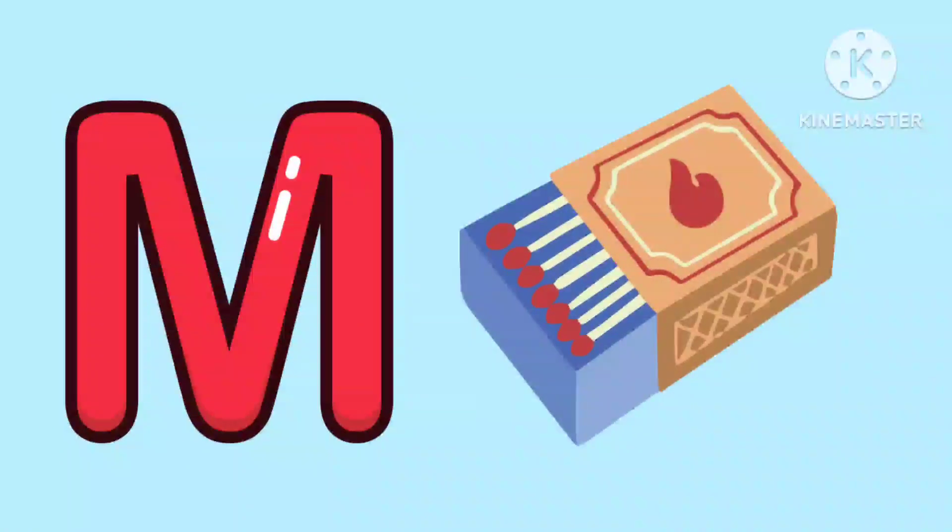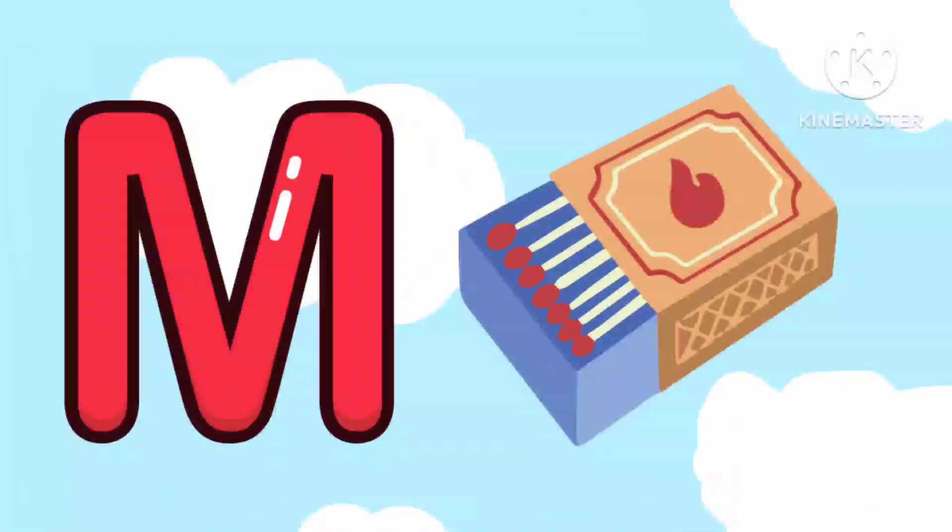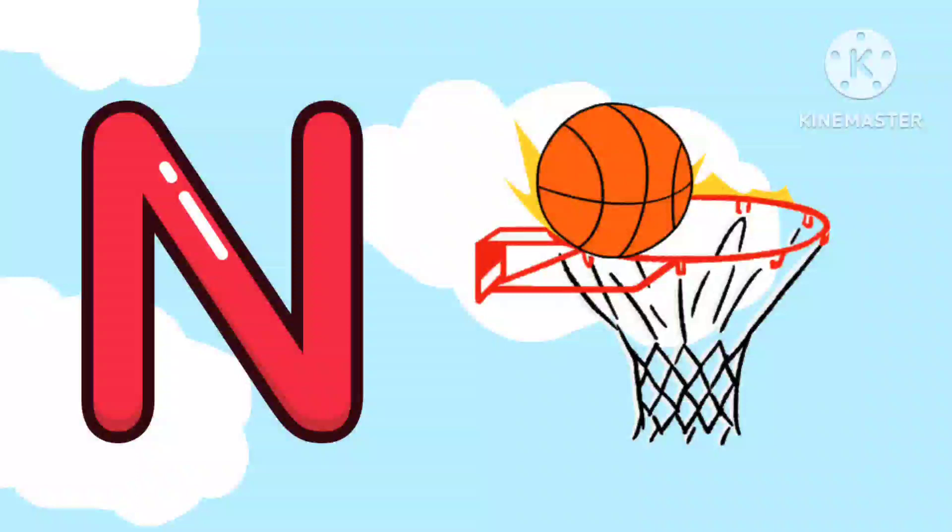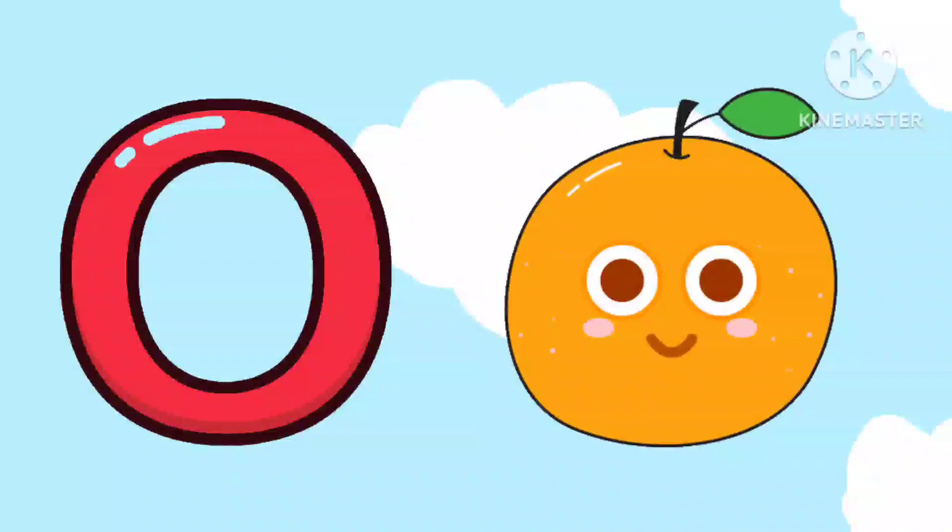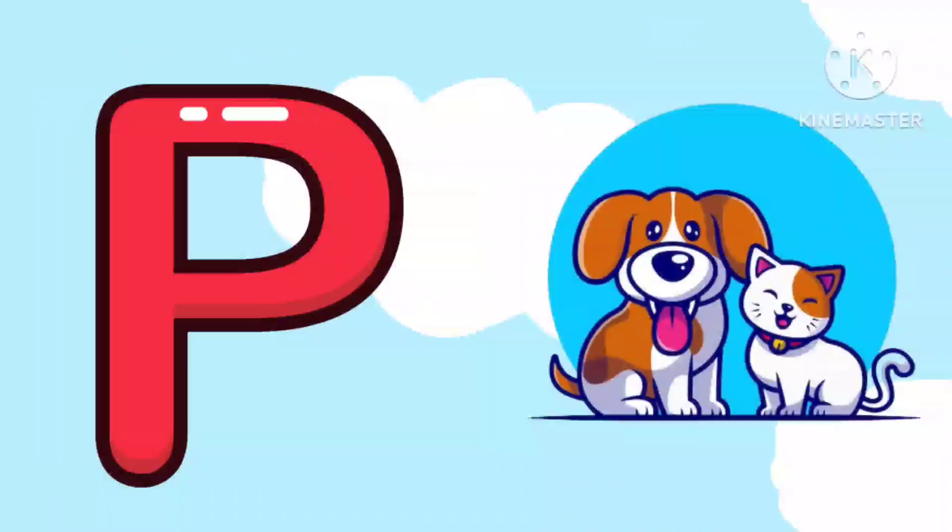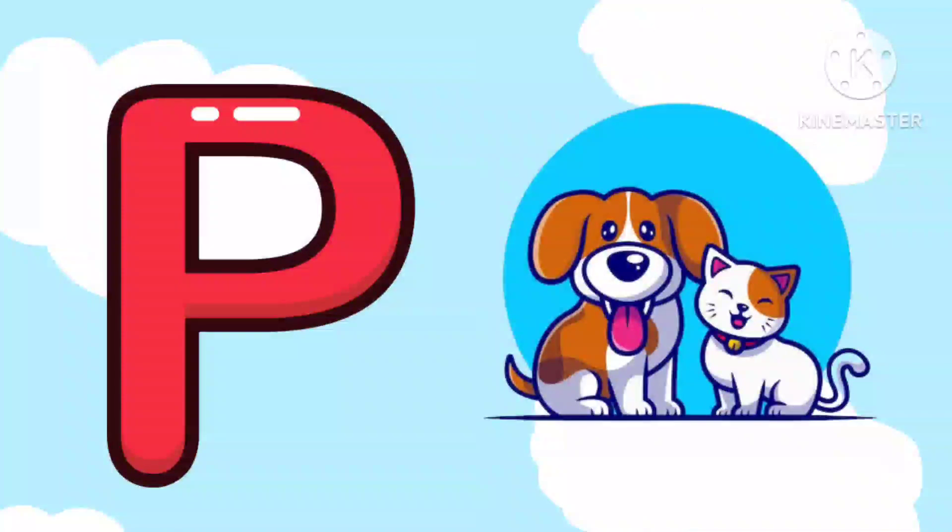M is for Mat, M, M, Mat. N is for Net, N, N, Net. O is for Orange, O, O, Orange. P is for Pet, P, P, Pet.